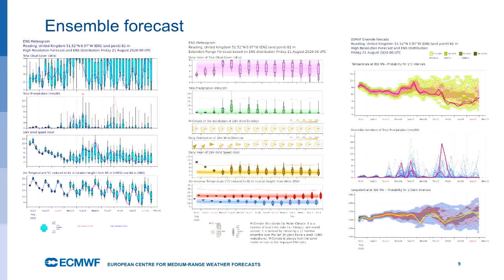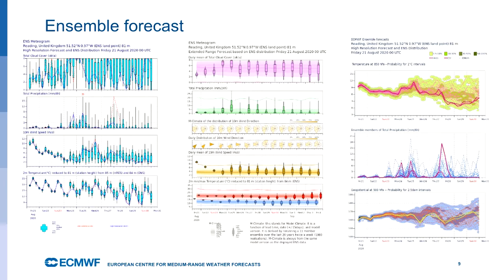Thank you very much for all these comments. So these are the meteograms — let's focus on this left-hand panel. This is the 10-day meteogram that we produce at the centre. For the moment, if we just focus on the bottom row, this is the two-metre temperature at different forecast lead times from the forecast on Friday the 21st of August. You can see these box plots: the box indicates the interquartile range — the 25th to 75th percentiles — and then the lines tell you the 1st and the 99th percentile. It gives you an idea of the extreme nature of the ensemble.